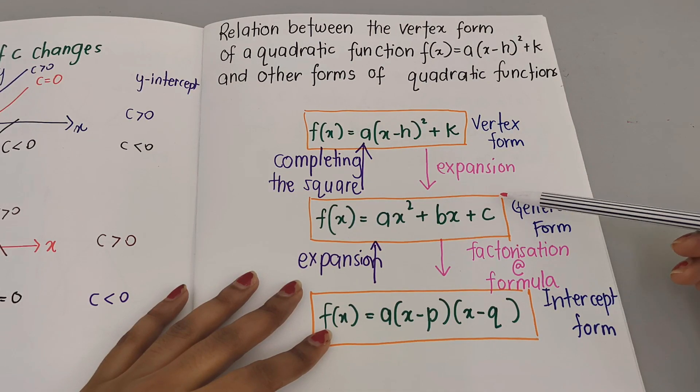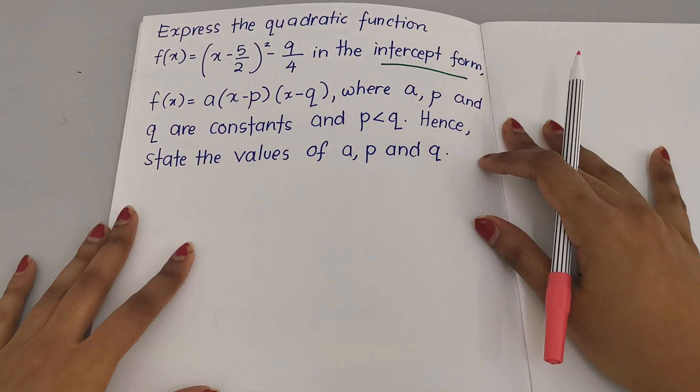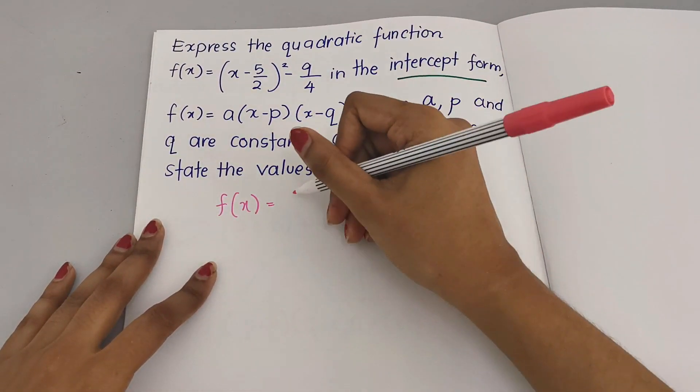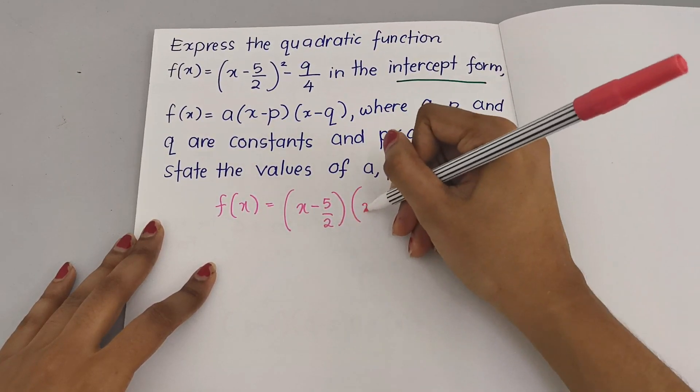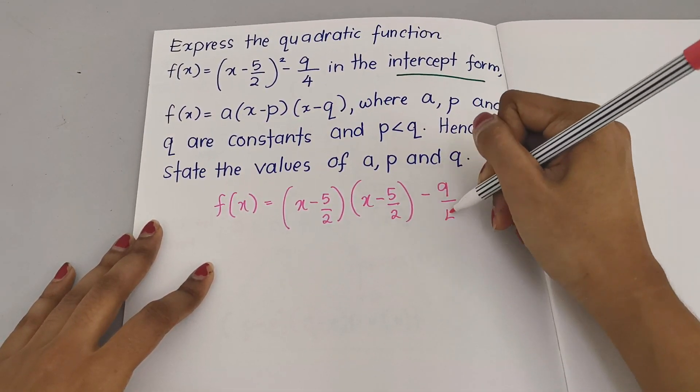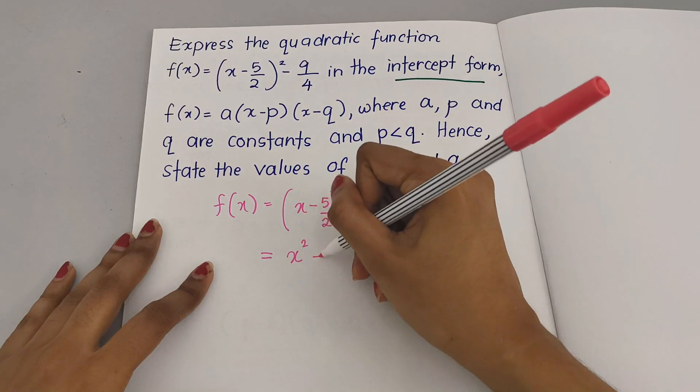So let's do the expansion first. We have f(x) equals to (x - 5/2)(x - 5/2) minus 9/4. So here after expanding I would get...